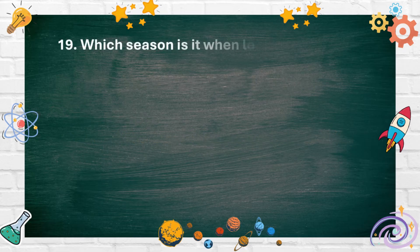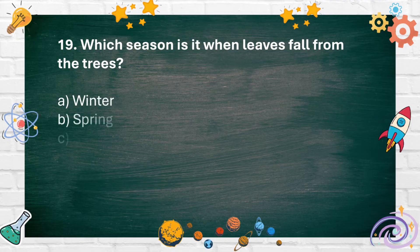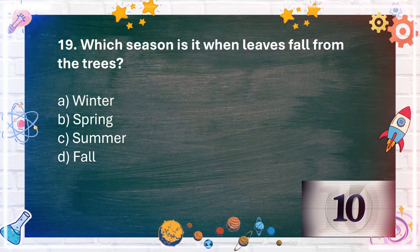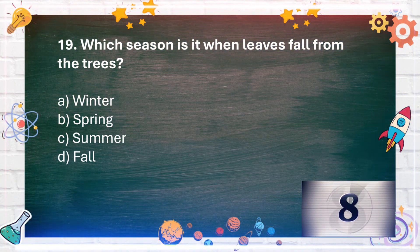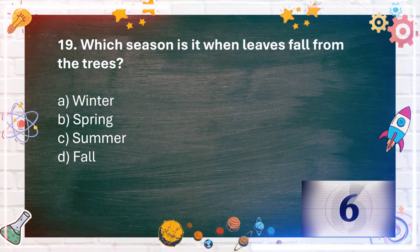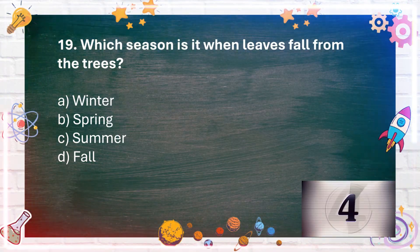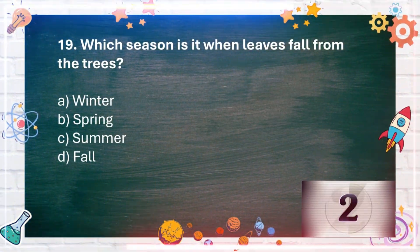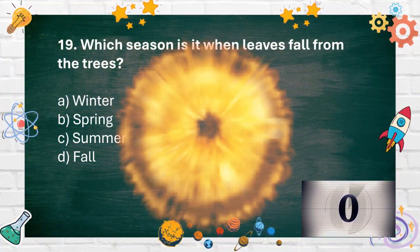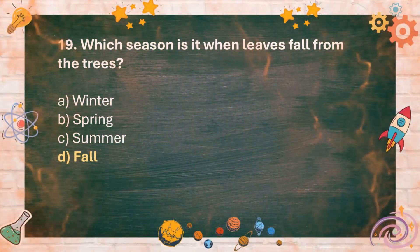Number 19. Which season is it when leaves fall from the trees? A. Winter B. Spring C. Summer D. Fall. The answer is D. Fall.